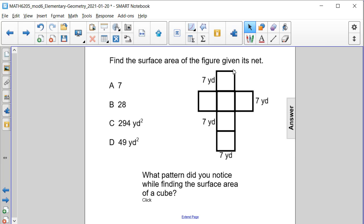Find the surface area of the figure given its net. If we look at the net we have here, we have six squares which would come together to form a cube, and a cube is composed of six squares.